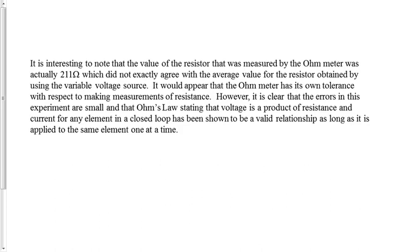Paragraph three is error analysis. Be very passive when writing — avoid phrases like 'human error' or 'calculation errors' since those should be fixed. Instead, mention instrument-related sources of error, such as how the ohmmeter itself has its own tolerance and could be off by a certain percentage from the actual result. These kinds of errors explain why your percent error is not zero. Keep error analysis passive — suggest reasonable reasons why your percent error exists rather than saying there were a lot of errors.